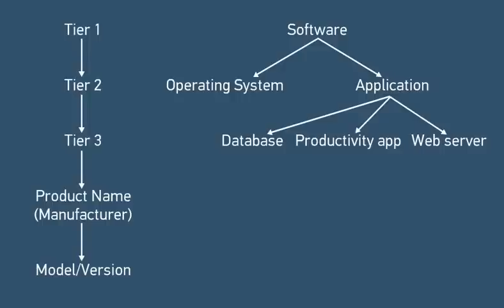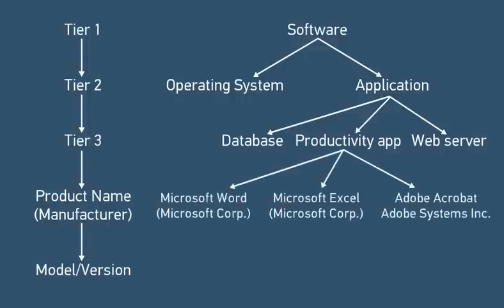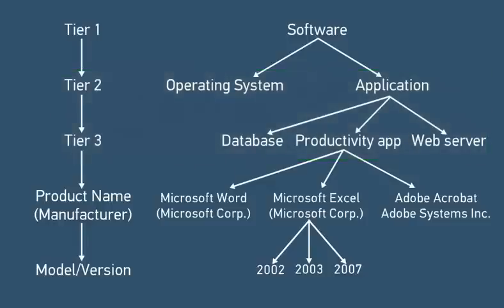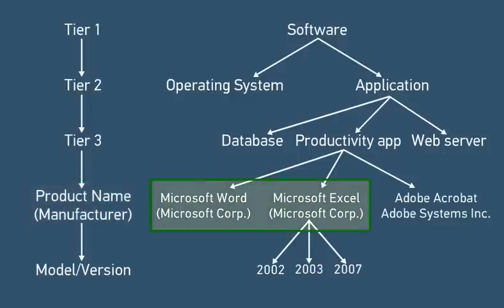The Tier 3 category that you select restricts which product names are displayed, and the product name that you select both automatically determines the manufacturer and restricts which models or versions are displayed. Tiers 2 and 3 are optional. Each product name in the product catalog is related to only one manufacturer, but a manufacturer can be related to multiple products.